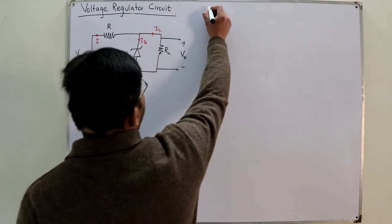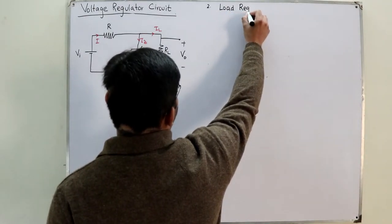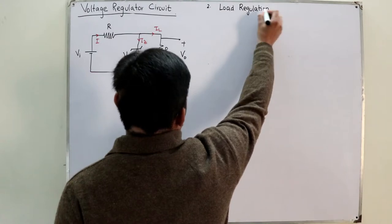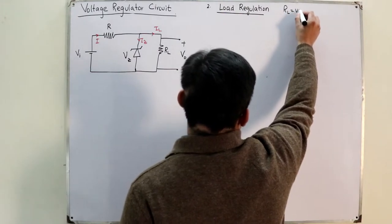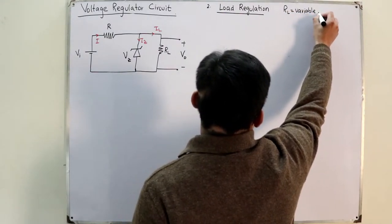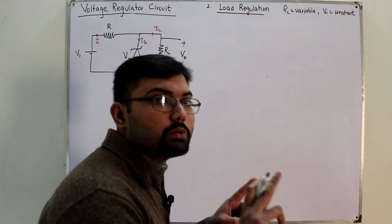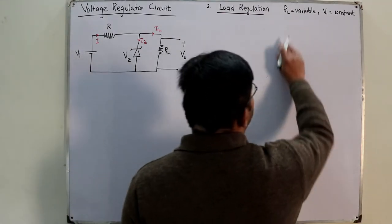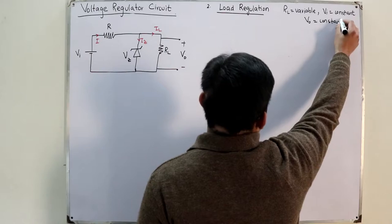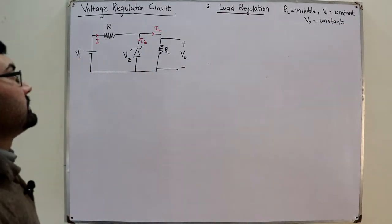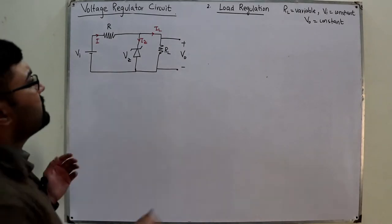This is Case 2: load regulation. In this case, RL is variable. We keep the input voltage constant, and the output voltage remains constant irrespective of changes in the load. So a variable RL will have no effect on the output — it stays constant. Let us start analyzing the circuit.